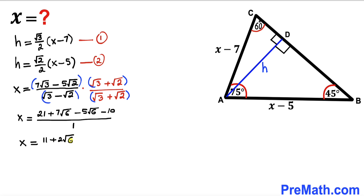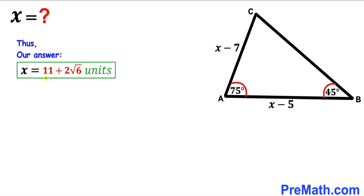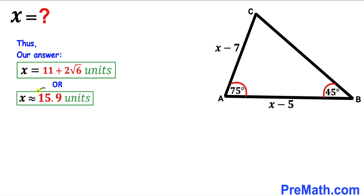Combining like terms in the numerator: 21 minus 10 = 11, and 7√6 minus 5√6 = 2√6. Therefore x equals 11 plus 2√6 units, which is approximately 15.9 units. Thanks for watching, and please don't forget to subscribe to my channel for more exciting videos!